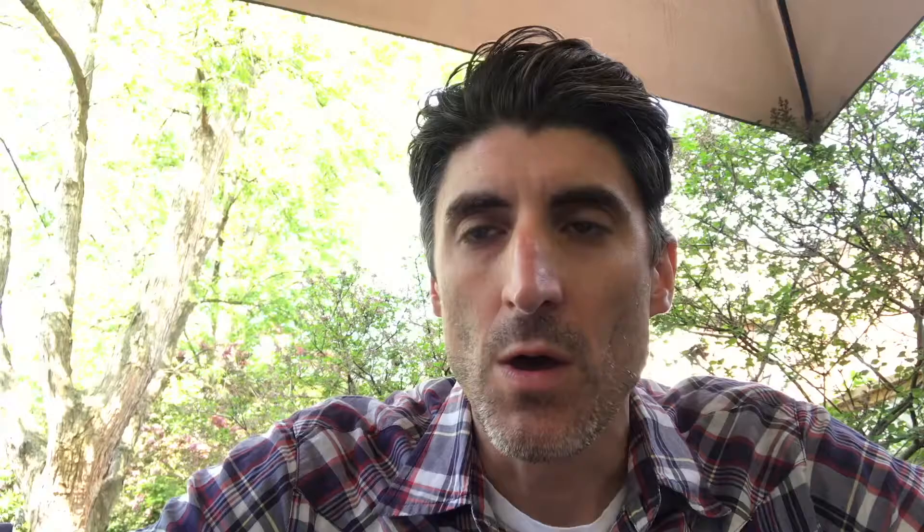Basically this is a phrase used to refer to the earliest time periods in human history that involved stone tools. There were old stone ages, or Paleolithic periods, all around the world, starting and ending at different time periods. In North America, archaeologists use this term to refer to the oldest sites they could find — anywhere from 12-plus thousand year old sites to sites about nine and a half thousand years old, particularly in Ontario.